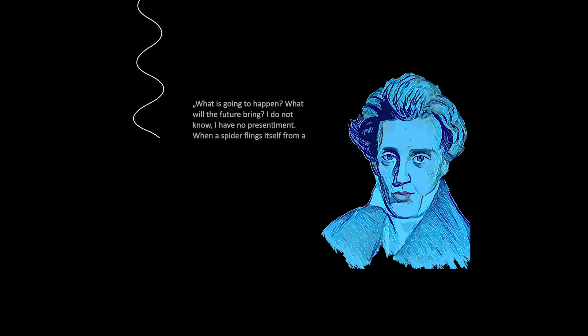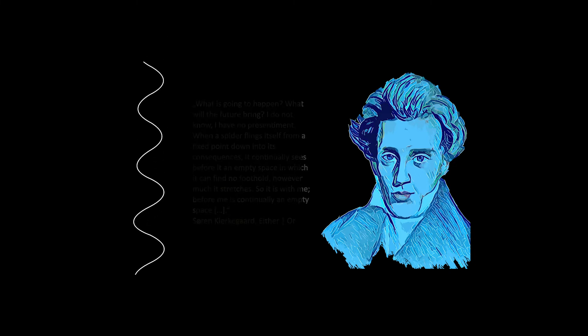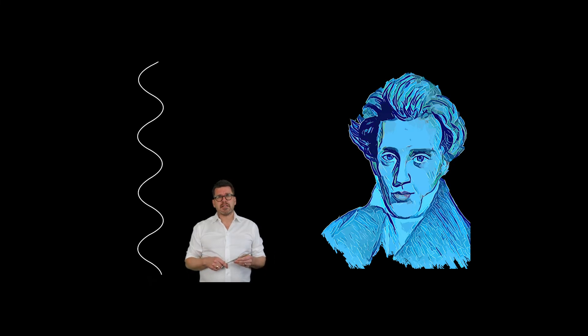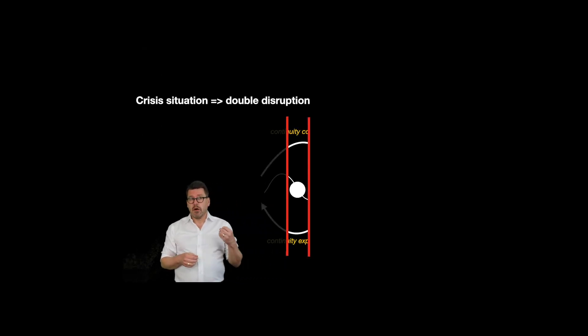When a spider flinches itself from a fixed point down into its consequences, it continually leaves before it an empty space in which it can find no foothold. So it is with me, before me is continually an empty space. If we take up Kierkegaard's metaphor, then in crisis situation we find ourselves in free fall. A crisis thus means a double disruption of our experience of continuity and destroys mostly ad hoc our construction of continuity.